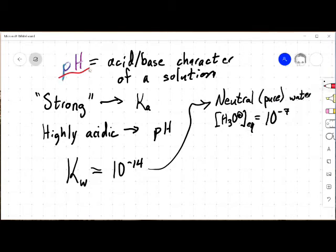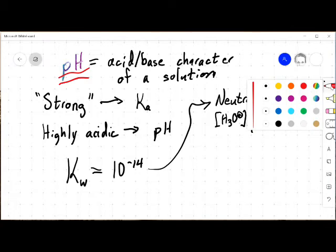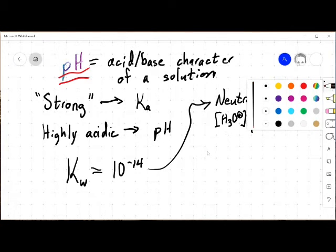Because pH is a way for us to describe the H3O concentration using numbers that are a little bit easier to work with. So pH is equal to negative log of the H3O plus concentration.